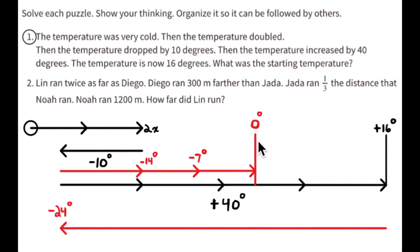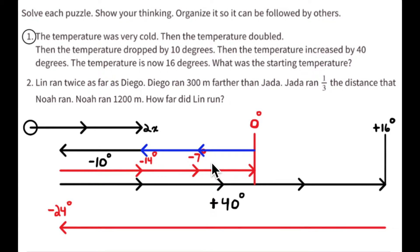So the starting temperature was actually negative 7 degrees. Here is 0 degrees, and I chose the wrong direction to start — I went to the right, but the temperature actually goes colder below zero. So it starts at negative 7 degrees, then doubles to negative 14 degrees, drops by 10, adds 40 degrees, and ends up at positive 16 degrees.